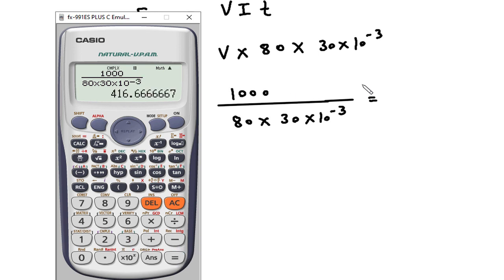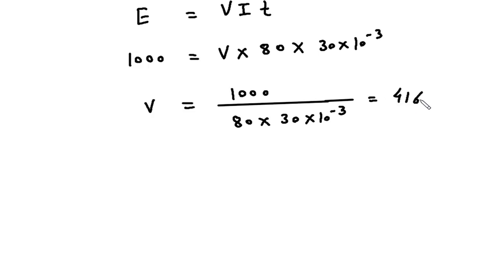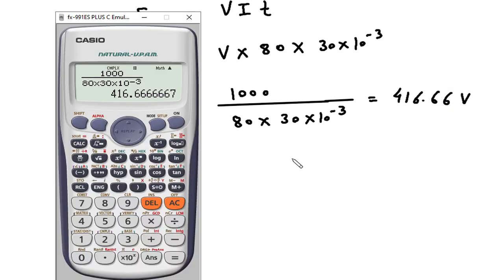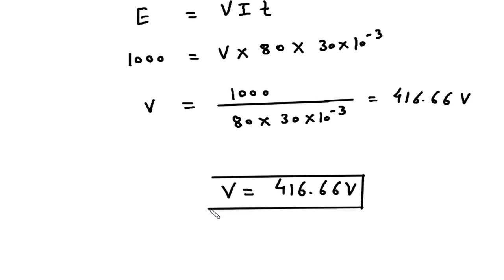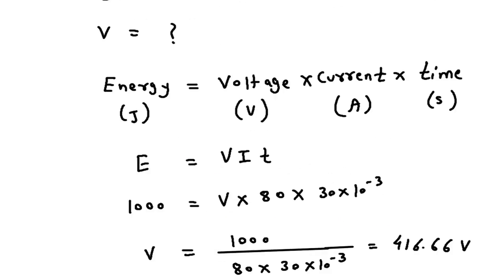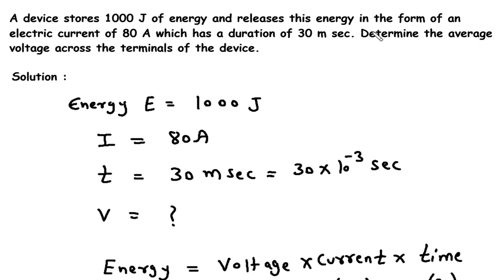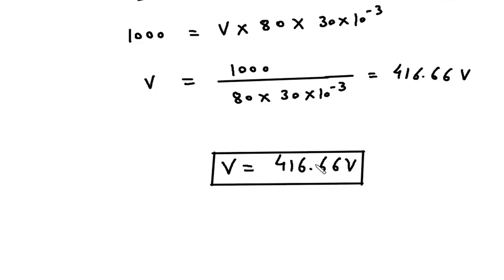So this is 416.66 volts. The unit of voltage is volts. Therefore, average voltage V is equal to 416.66 volts. This is the final answer.